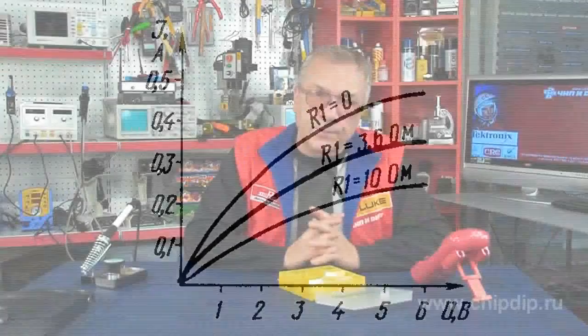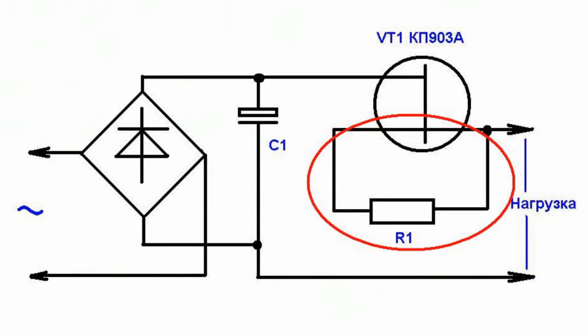The protection circuit operates as follows. If the resistance is equal to zero, that is, the source is connected to the gate and the load consumes about 0.25 A, the voltage drop across the FET will not exceed 1.5 V, and rectified voltage will be applied to the load.